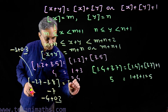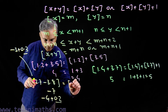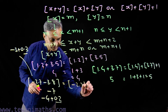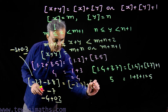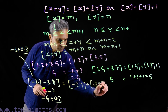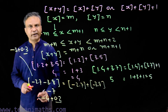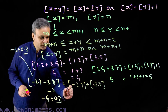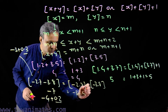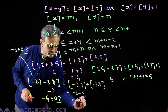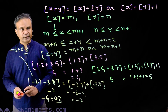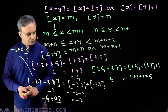We write the greatest integer of minus 2.7 plus the greatest integer of minus 3.8. This is minus 3 plus minus 4, which equals minus 7. So this comparison holds.